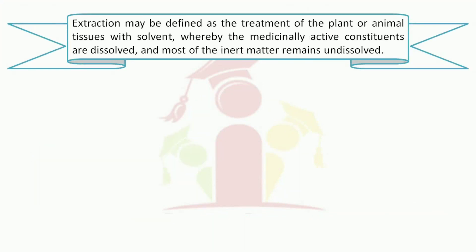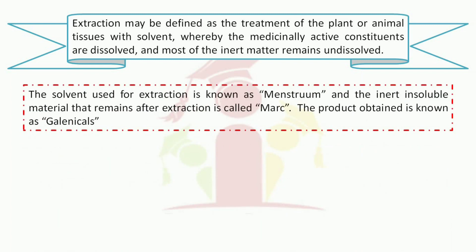Let's begin with today's topic. Extraction may be defined as the treatment of plant or animal tissues with solvent whereby the medicinally active constituents are dissolved and most of the inert matter remains undissolved. The solvent used for extraction is known as menstruum and the inert insoluble material that remains after extraction is called marc. The product obtained is known as galenicals.